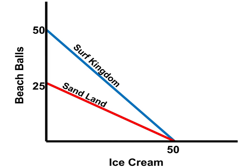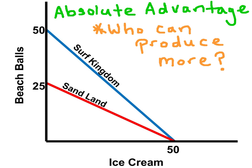Here are Production Possibilities Frontiers for Surf Kingdom and Sandland. These PPFs were drawn with a straight line, which means that opportunity costs are constant. Now let's go over Absolute Advantage, or who can produce more.